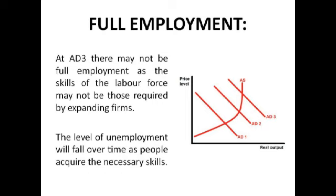At AD2 we're producing more, we need more people — there's a slight rise in output and a slight rise in employment but no major rise in price level. Then at AD3 pretty much everyone is employed. Some people still have skills that don't match where they're needed, so they'll need to undergo retraining before they can get a job. Once trained, they can be employed and this also enables us to produce even more.